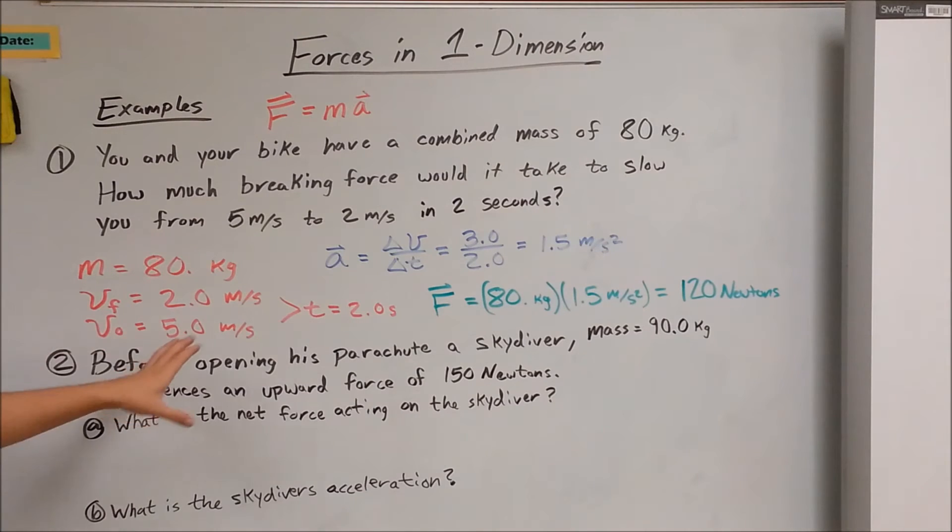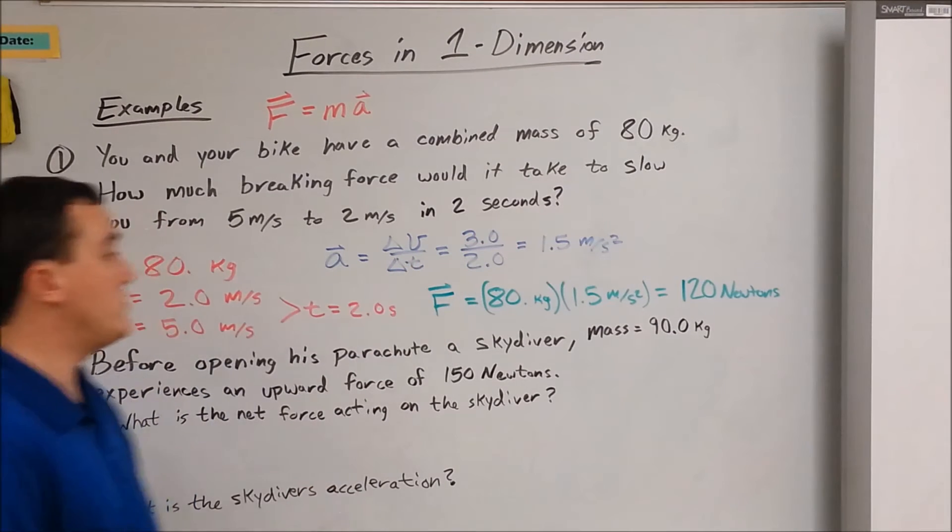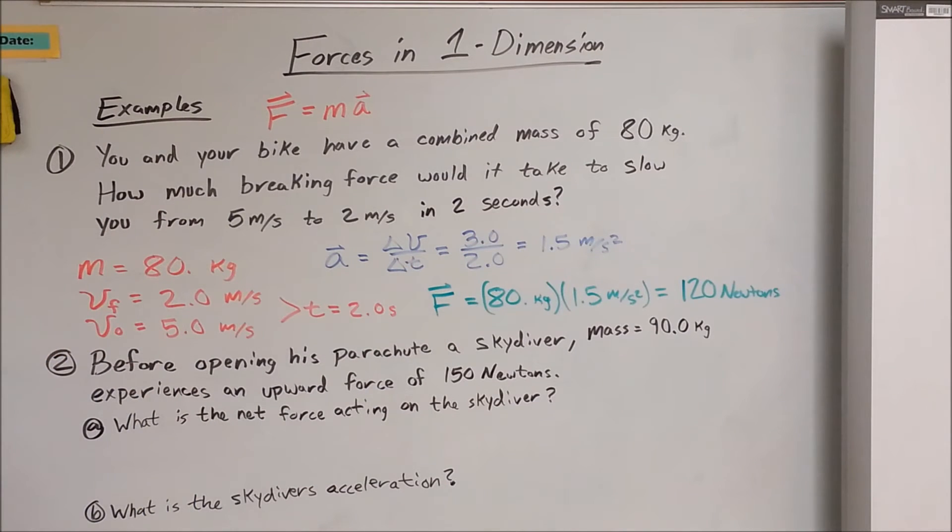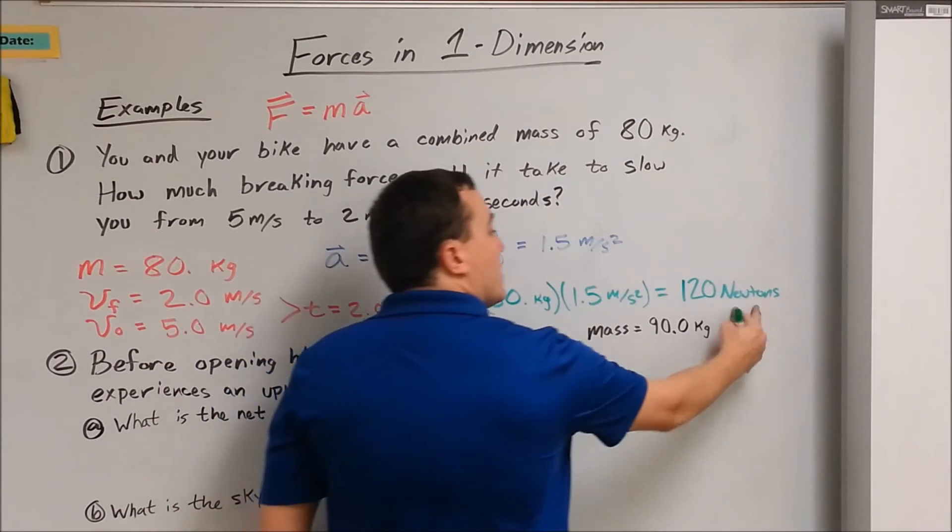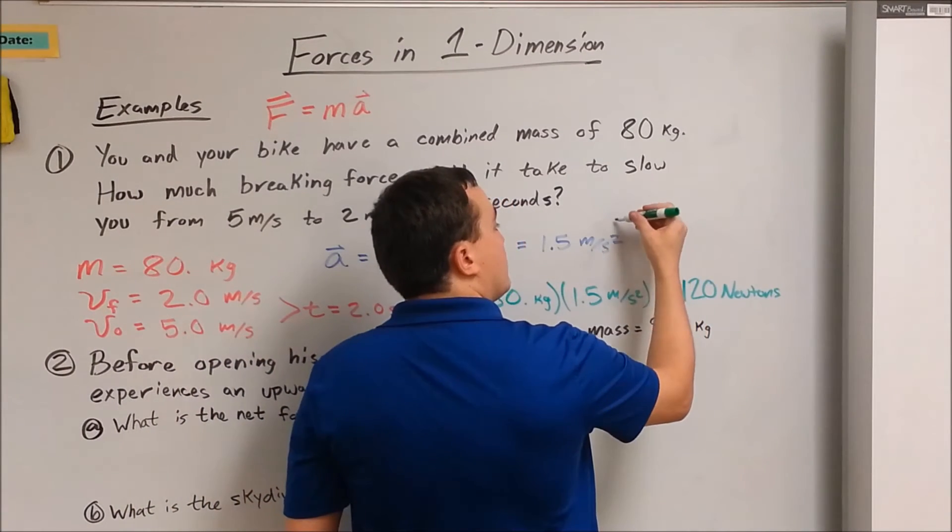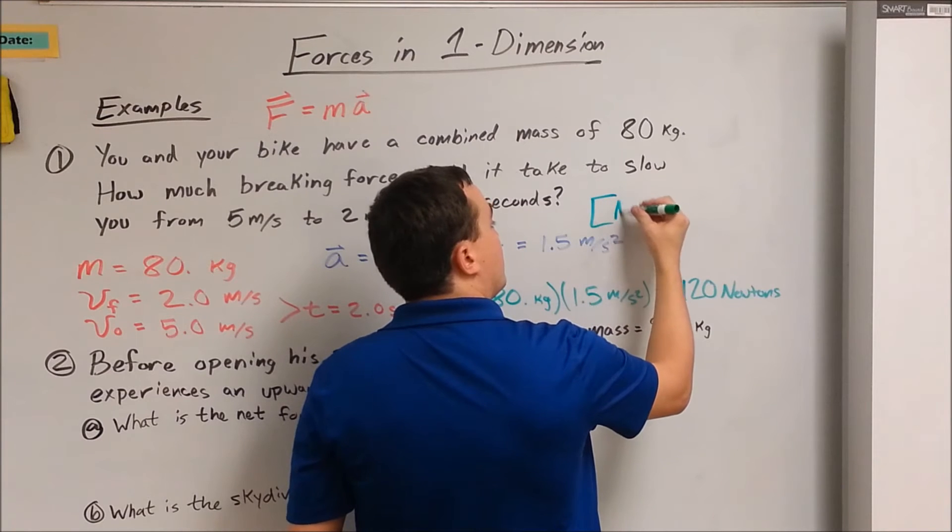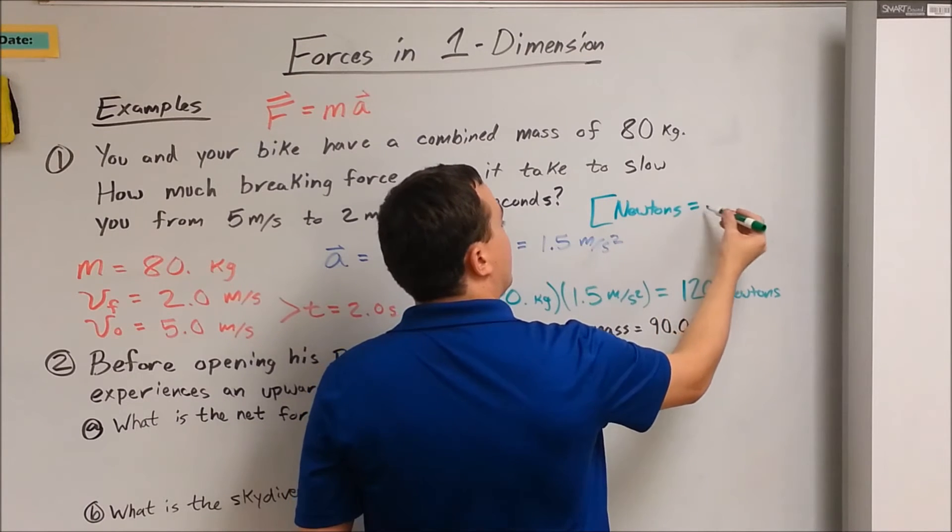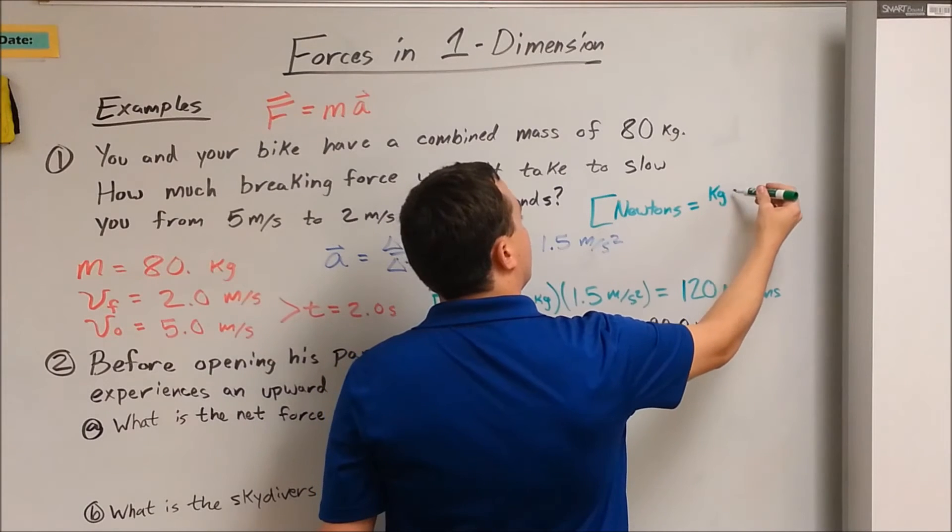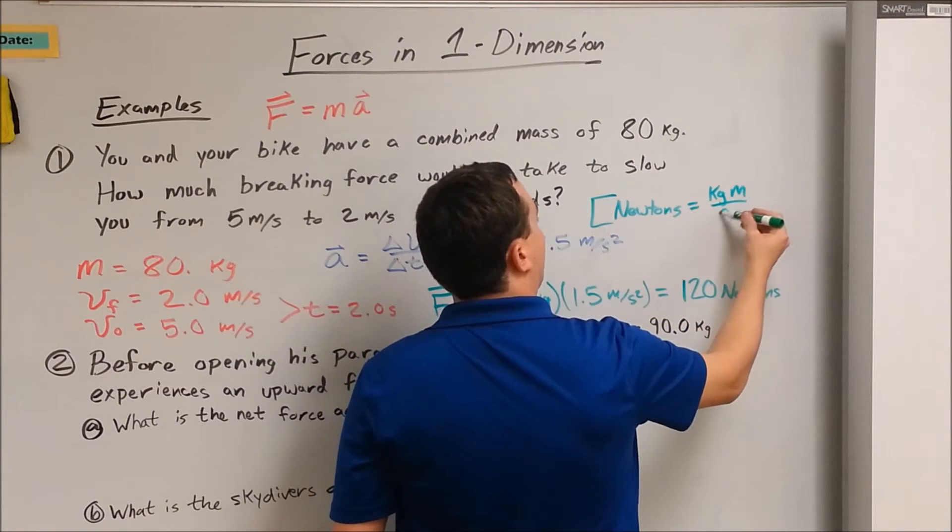Now notice throughout this problem we kept two significant figures, because most of the time in physics you are going to be using significant figures. And another thing to note: our measure of force is newtons. So you should note newtons equals kilograms times meters per second squared.